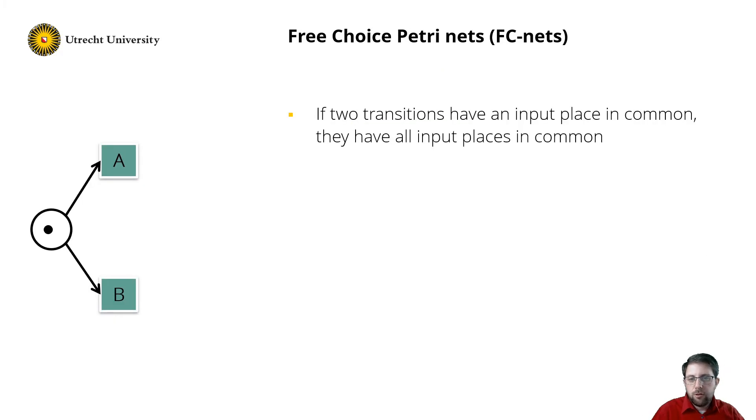The first class I want to discuss with you are free choice Petri nets, or FC nets. This is a bit more difficult class. It requires that if two transitions share an input place, they should share all input places, which we write formally like this.